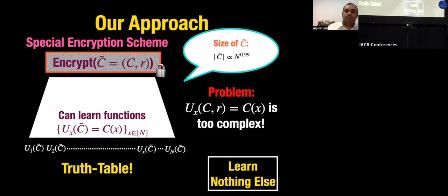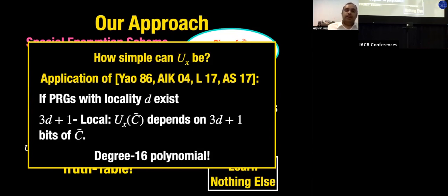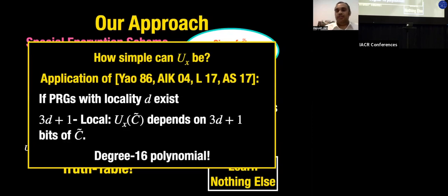Can we replace U_x(C̃) with something much simpler? Classical works show that using PRGs in NC0, you can replace these with much simpler local functions. If the locality of the PRG is t — meaning every output bit depends on at most t input bits — then you can replace U_x(C̃) with specifically chosen (3t+1)-local functions, which are (3t+1)-degree polynomials. The minimum locality in the literature for such PRGs is 5, so the minimum usable polynomial degree is 16.